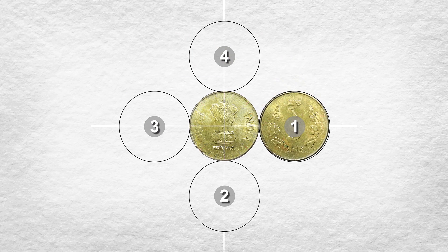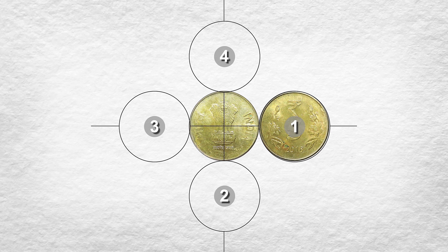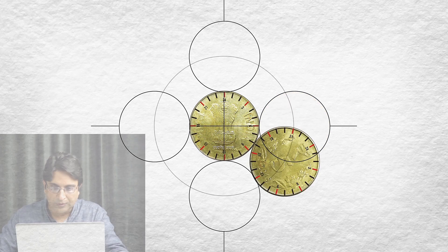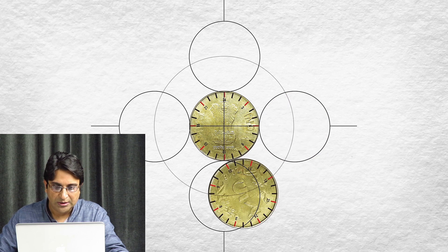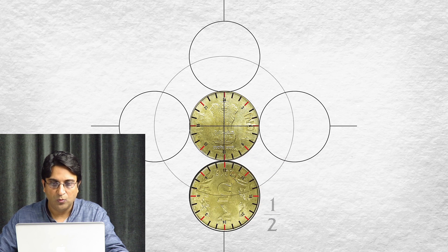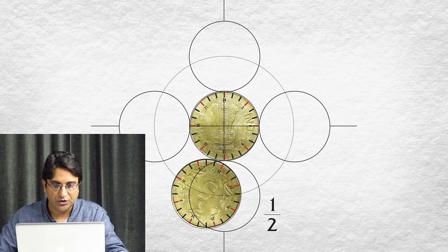So right now, notice that the five is vertically upwards. Let's start the rotations. I can see that the five is going down, and as it comes to the second position, it's perfectly down vertically. So half a rotation is over.